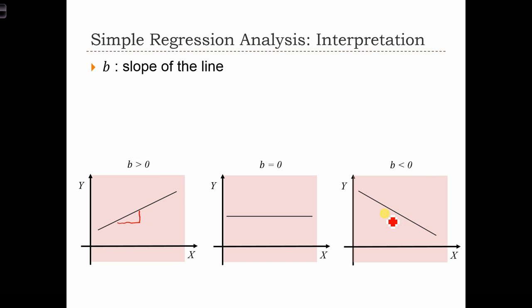If b is negative, we have a negative slope. So in this case, we have negative rise over run. And when b is equal to 0, the regression line is flat. There is no slope at all.